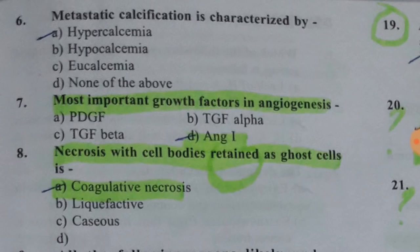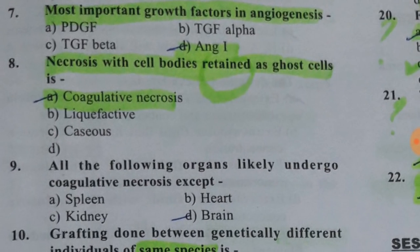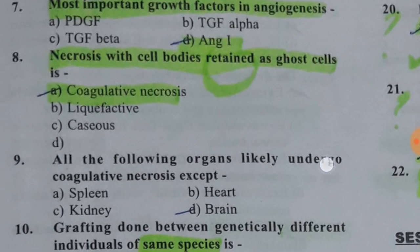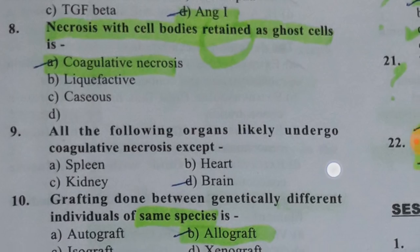Starting with metastatic calcification — it is characterized by hypercalcemia. You must know different examples. The most common important growth factor in angiogenesis is Ang1. In coagulative necrosis, cell bodies are retained as ghost cells.